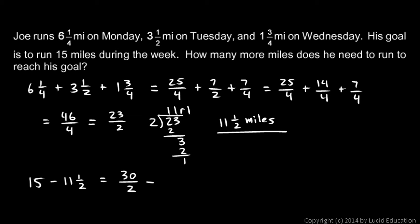Minus 11 halves. And we've seen that 11 halves is the same as 23 over 2, so we have 30 over 2 minus 23 over 2. That's going to be 7 over 2, and that's our answer: 7 halves. And that's the same as 3 and a half, so that's how many more miles he needs to run to reach his goal of 15 miles for the week.